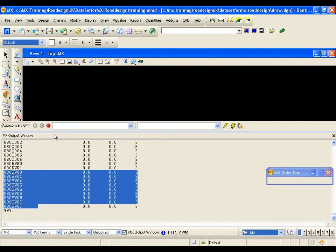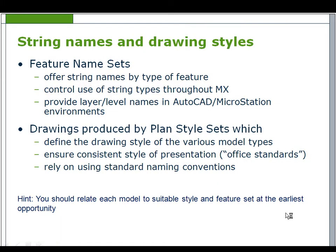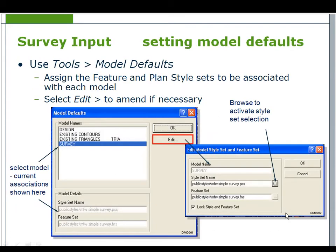The MX output window will be discussed later. String names and drawing styles: feature name sets offer string names by description and control the use of string types throughout MX, and most importantly, provide level names in the CAD environment. Plan style sets are linked to feature name sets and define symbology for strings to be displayed in the drawing, and are essential for producing consistent styles of presentation for a company house style. Every model should be related to appropriate style feature sets at the earliest opportunity.